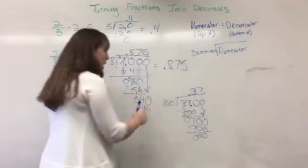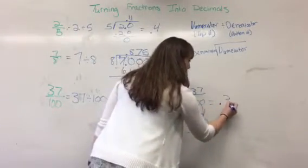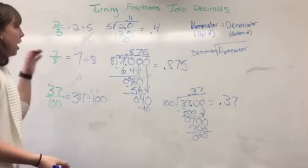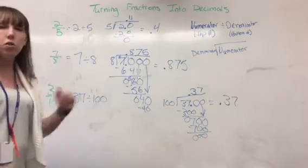We are at 0 and our decimal is 0.37. So there. That is how we turn our fractions into decimals.